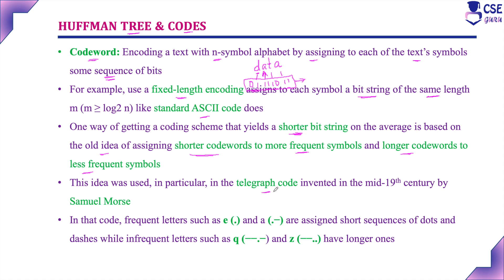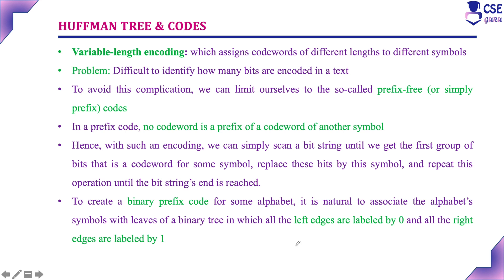This idea is used in the telegraphic code invented in the mid-19th century by Samuel Morse. In that code, frequent letters like E and A are considered — E's codeword is a dot, and A's codeword is dot-dash. E and A are more frequent letters, while infrequent letters like Q and Z get longer codes: Q is dash-dash-dot-dash and Z is dash-dash-dot-dot. In variable-length encoding, the number of bits to encode each character differs — that is, assigning codewords of different lengths to different symbols. That is called variable-length encoding.